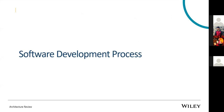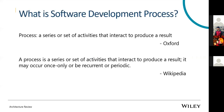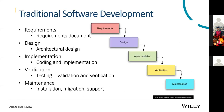Software development process is the methodology used to create a software product. The software development process is the series of activities undertaken to produce the software product. It can be done only once or recurrently. Traditionally, software was developed using something called the waterfall method.